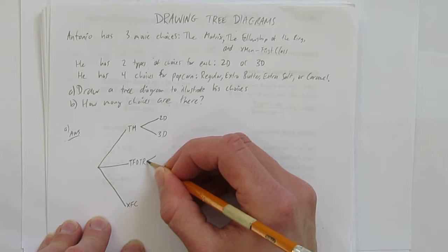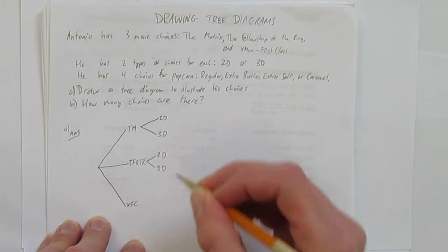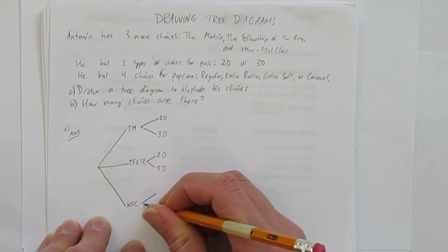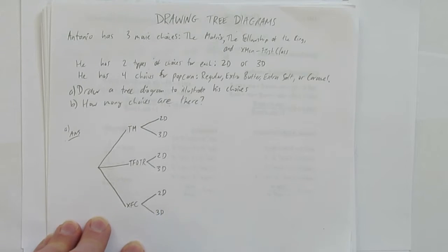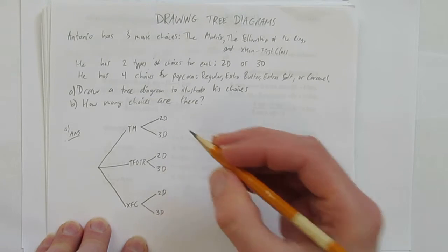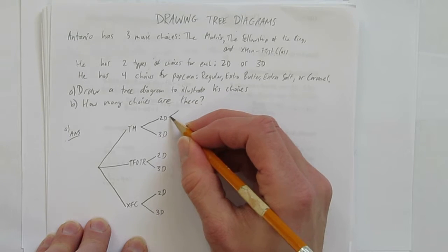Same thing if he chooses this one. He either gets a 2D movie or a 3D movie. And finally, there are four choices for popcorn. So each of those has to have four choices coming out of it.